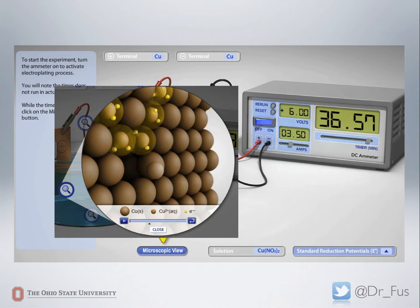So in a particular electrochemistry simulation, the students are seeing why the mass of the cathode and anode are changing rather than just observing it at a macroscopic level.